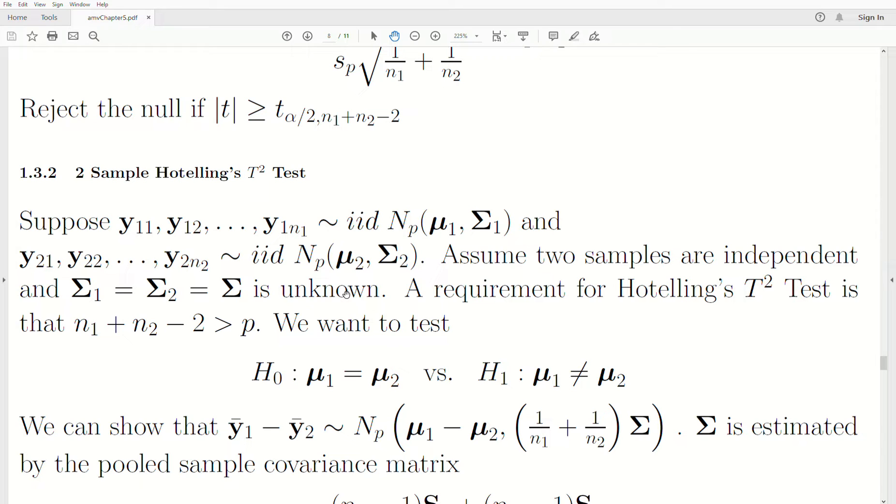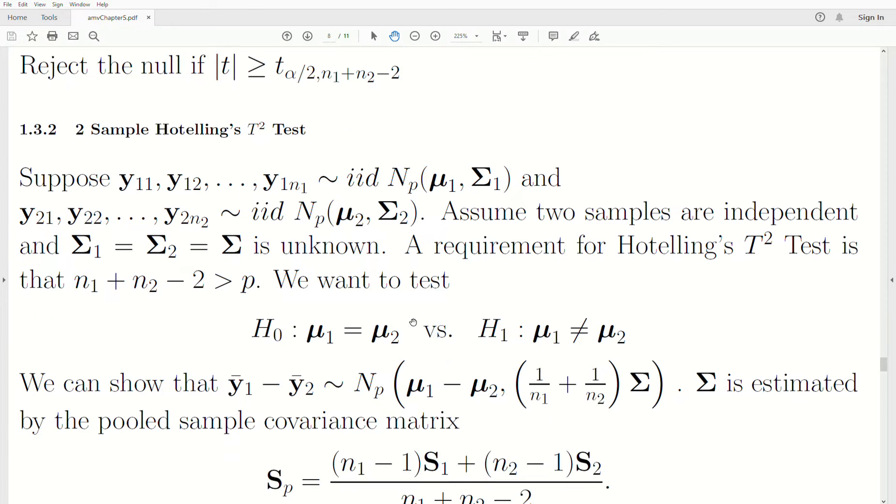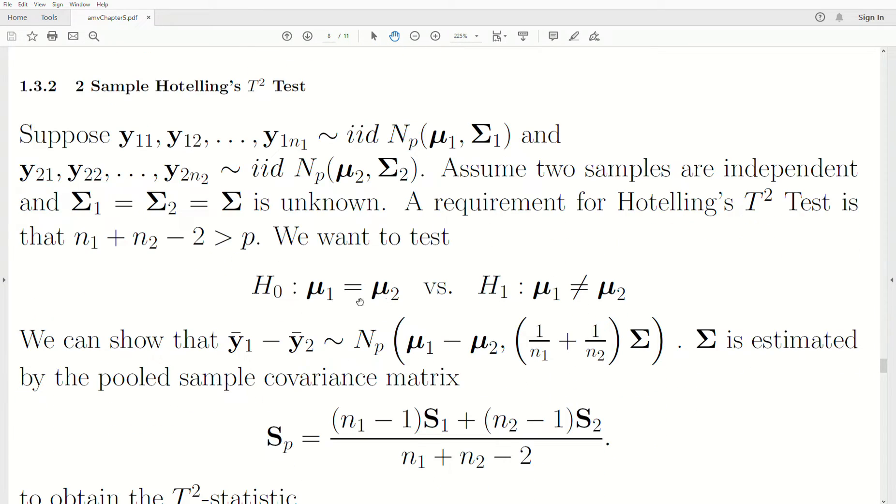A requirement for Hotelling's t-squared is that the combined sample size has to be greater than p. That's to make sure our sample covariance matrices are invertible. We want to test are the mean vectors, population mean vectors equal or are they different?